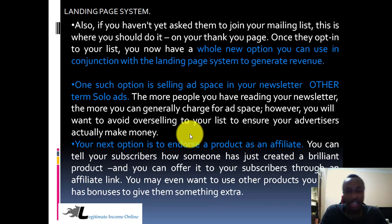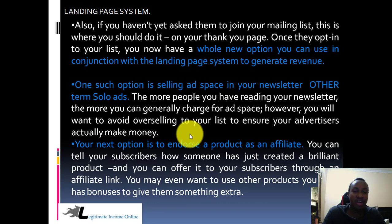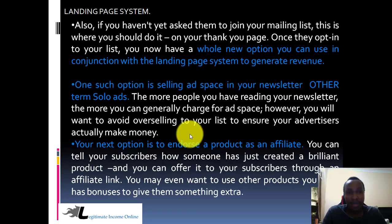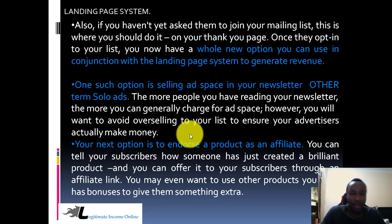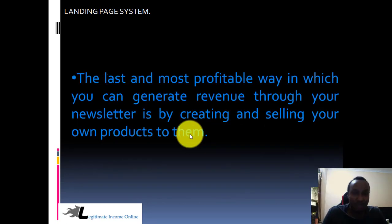Another option is to endorse a product as an affiliate — this is called affiliate marketing. You can tell your subscribers how someone has created a brilliant product and offer it through an affiliate link, so you get paid when they buy, either 50% or 100% commission. You may also want to use other products you have as a bonus — giving them something extra when they buy through your affiliate link.